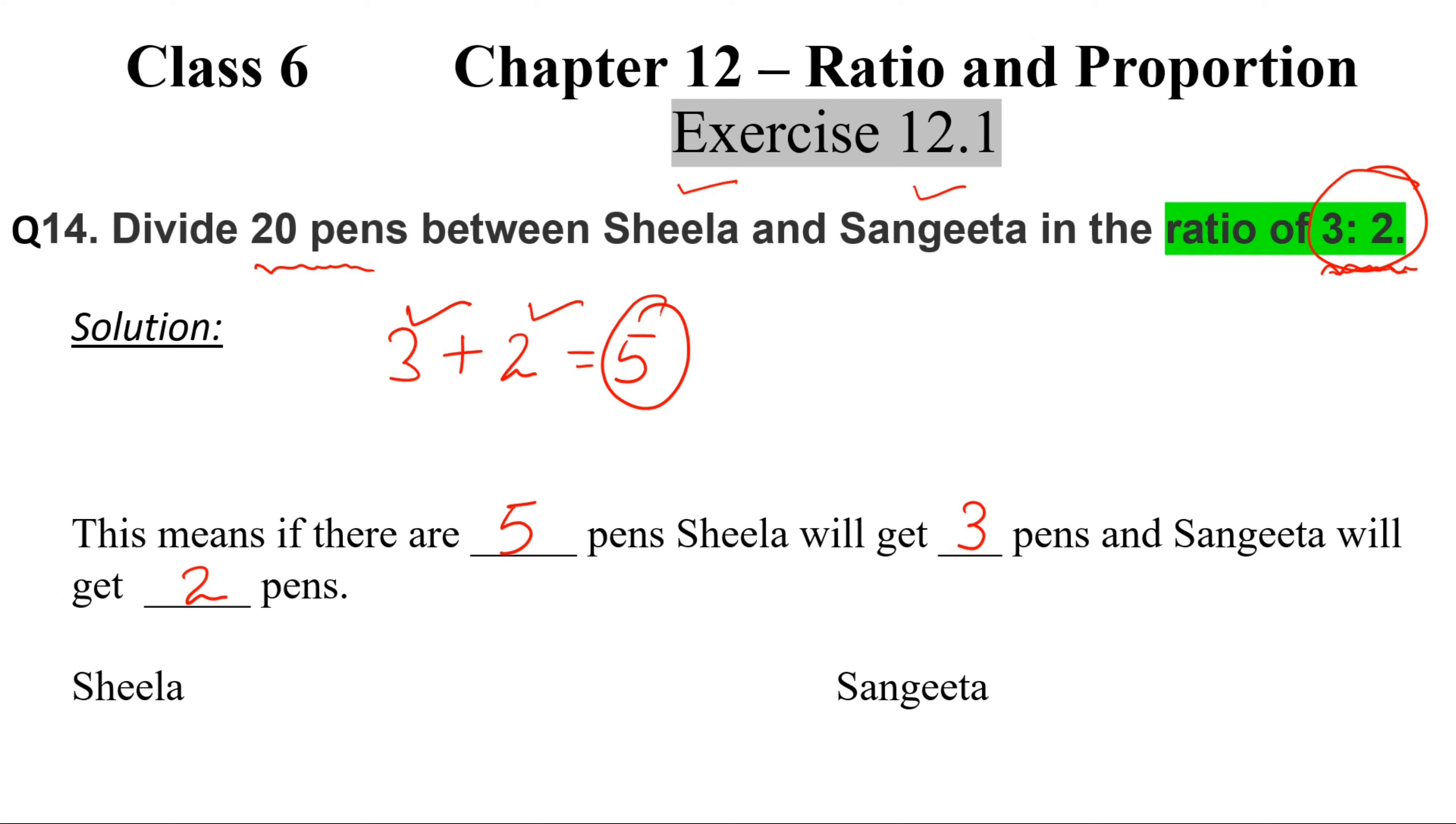This can be written as a fraction: 3 parts out of 5 parts for Sheela, and 2 parts out of 5 parts for Sangeeta. Once we have it as a fraction, we just need to multiply this by the amount that needs to be divided—the number of pens. It could be money, pens, or anything. Let's do it now.